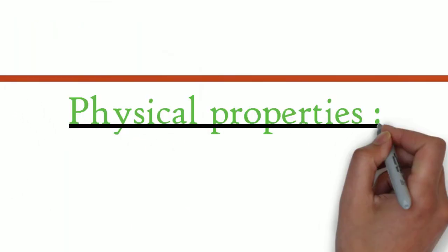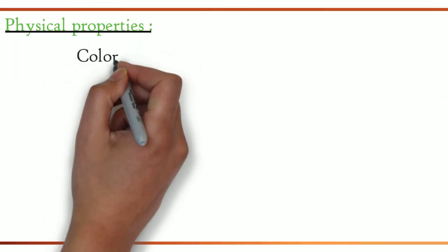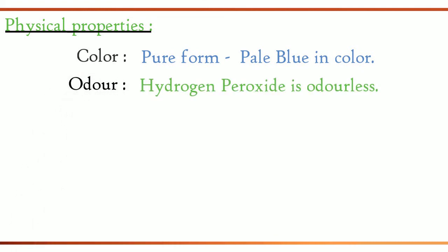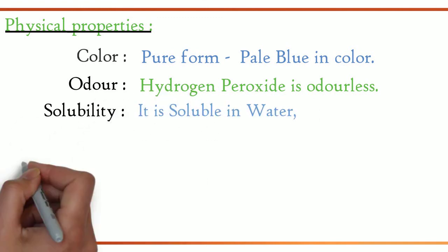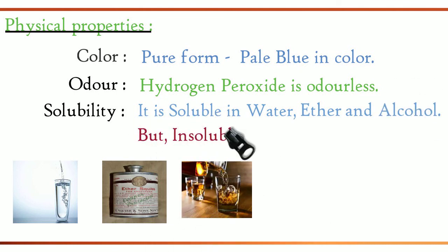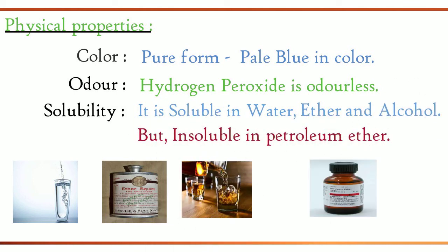Moving on to the physical properties. First, color: in its pure form, it is pale blue in color. Odor: hydrogen peroxide is odorless. Solubility: it is soluble in water, ether, and alcohol, but insoluble in petroleum ether.